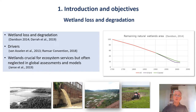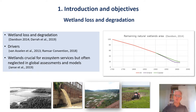The continuing loss and degradation of wetland ecosystems, particularly in some regions of the world, are well documented. Our understanding of the direct and indirect drivers that cause loss and degradation is increasing, for example agricultural and urban expansion that is driven by population growth and economic development. And despite an increasing awareness of the importance of wetland ecosystem services, they have often been neglected in global assessments and models, although this is now changing.